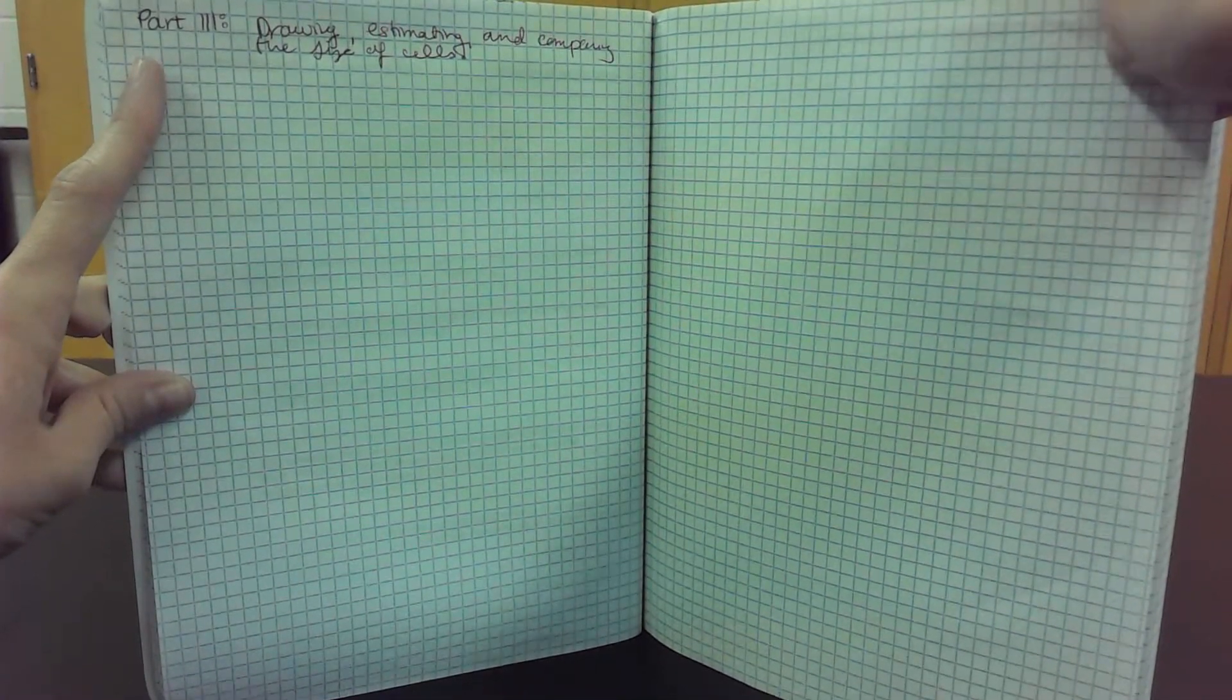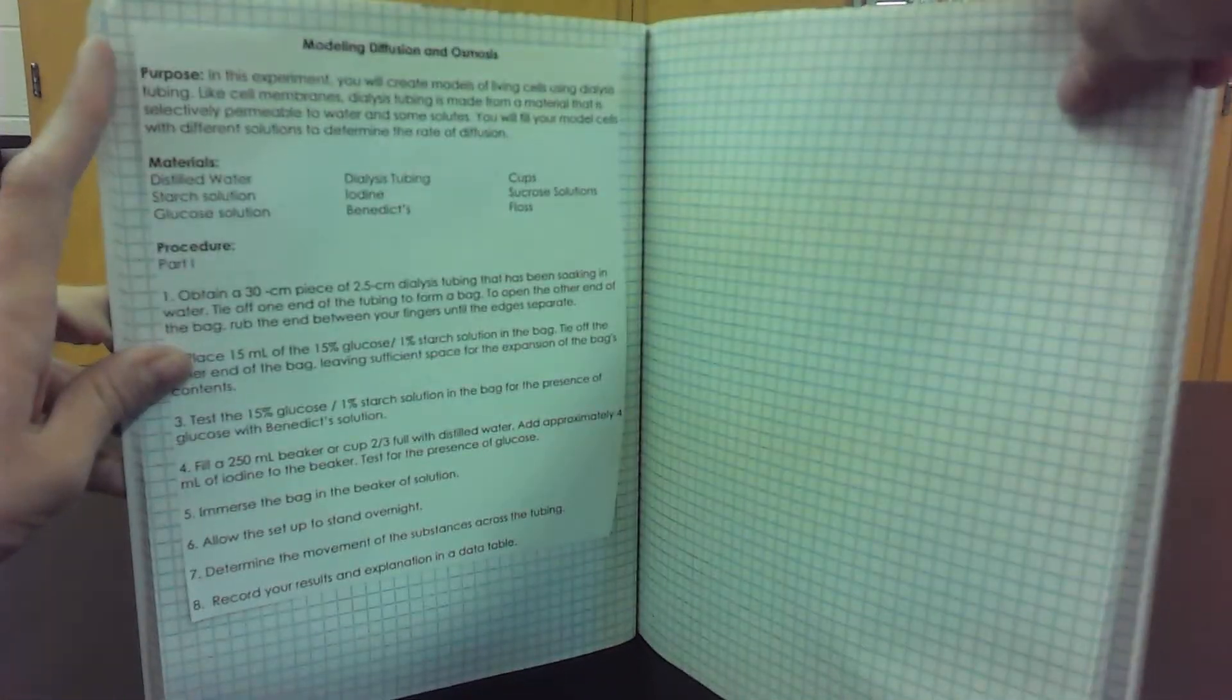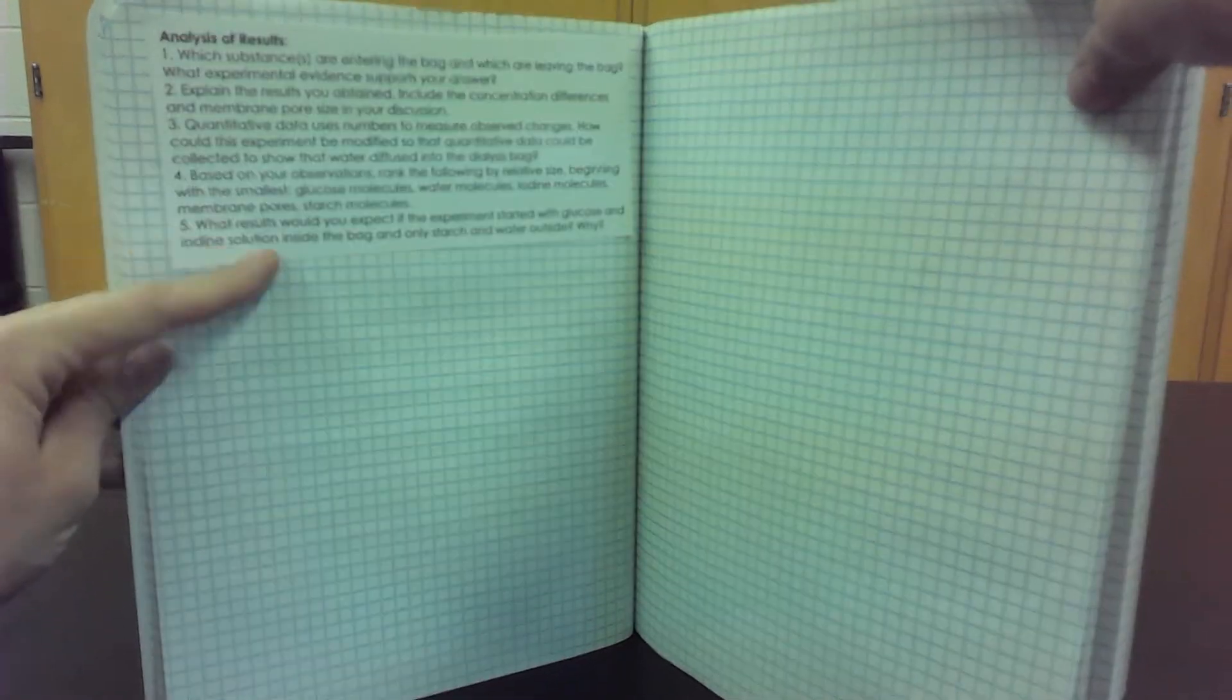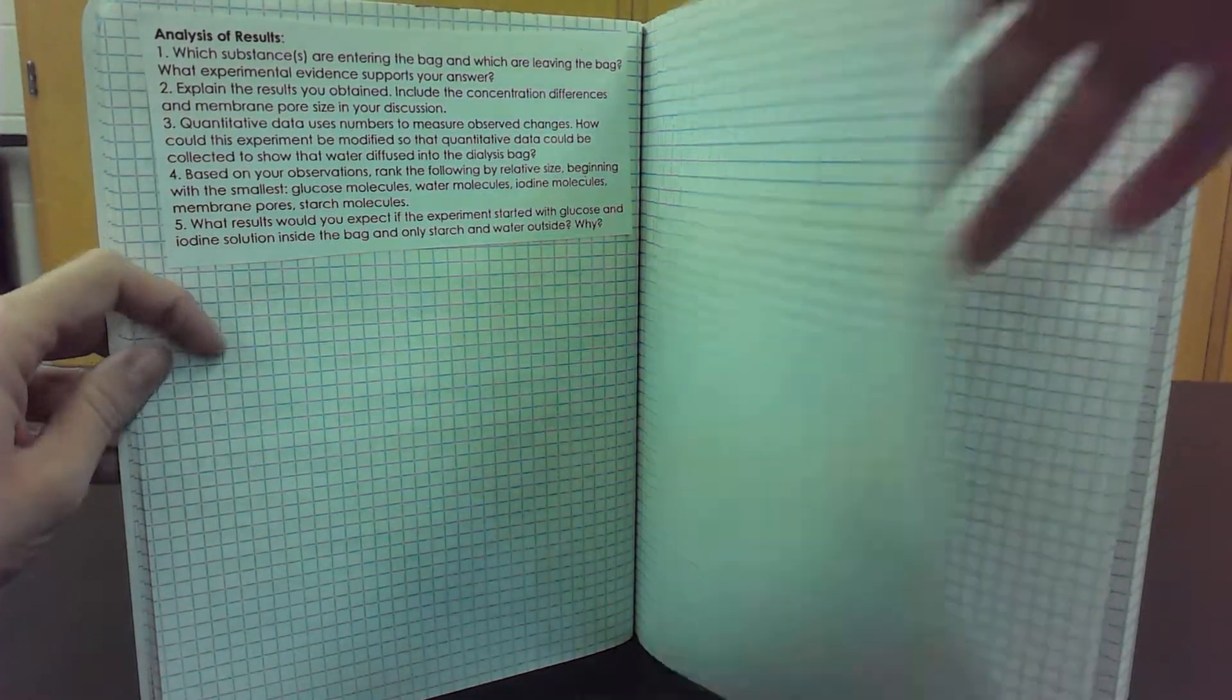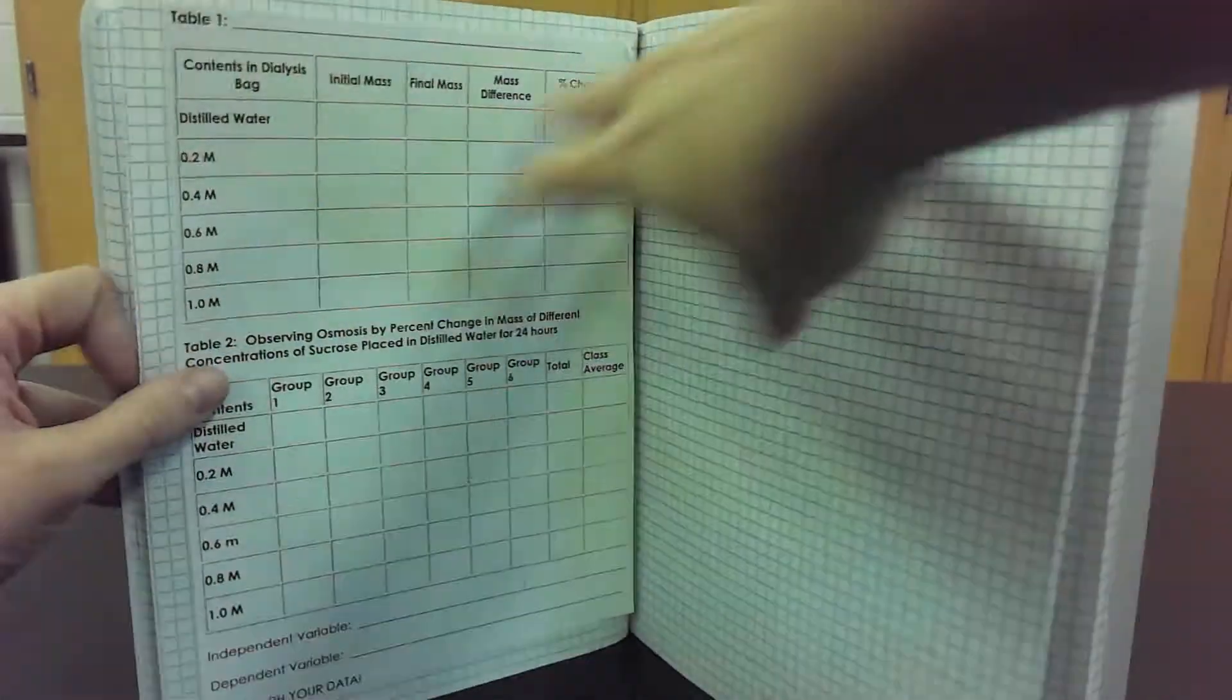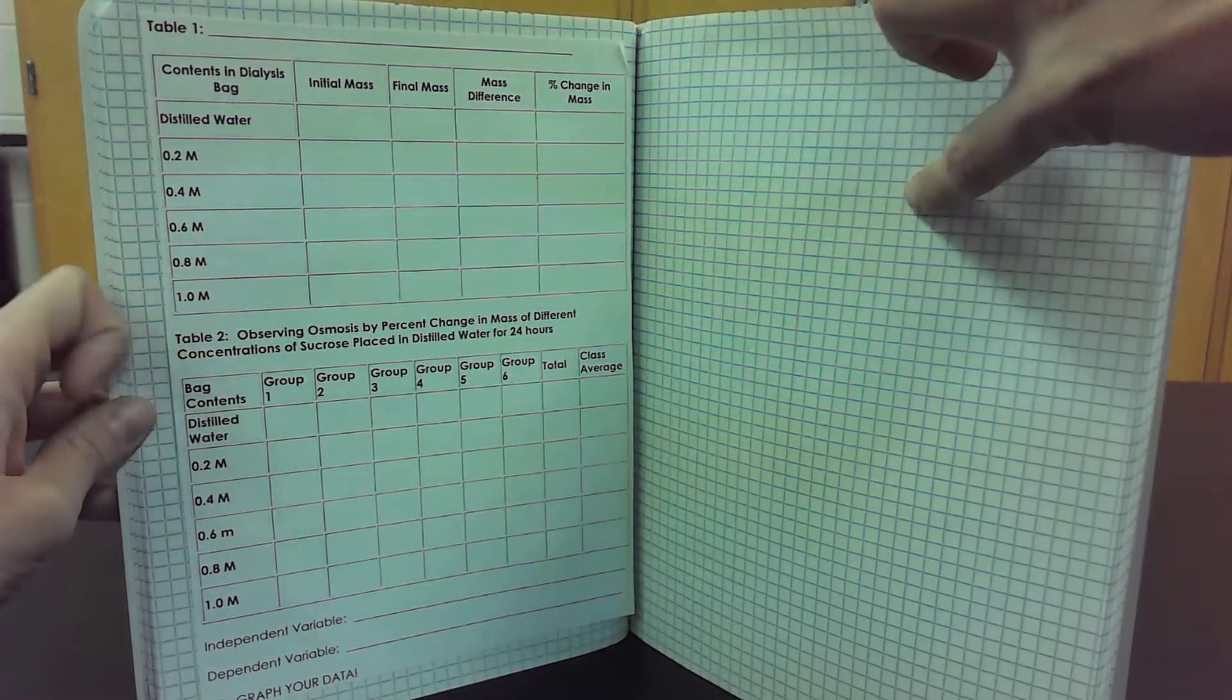And then the last lab, modeling diffusion and osmosis. This is a page that was cut in half, so these are the analysis questions for the first part of that lab. This is the procedure for the second part of that lab, and then this is the data table. So you'll have your data table here and you'll have a graph on this page.